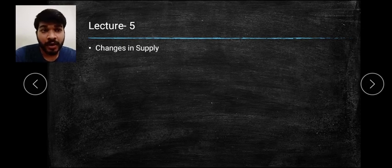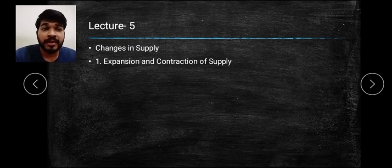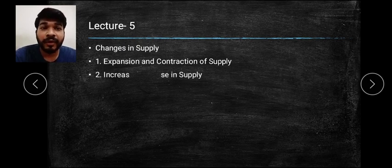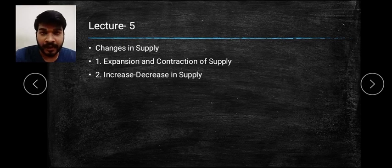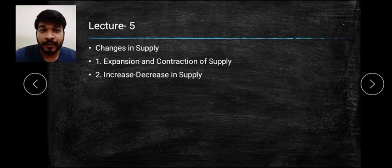So same way here, you find that expansion and contraction of supply is based on price, and the second is increase and decrease in supply, which is noted because there is a change in factors other than price which are affecting the supply. These are the two types of changes which are mainly happening.